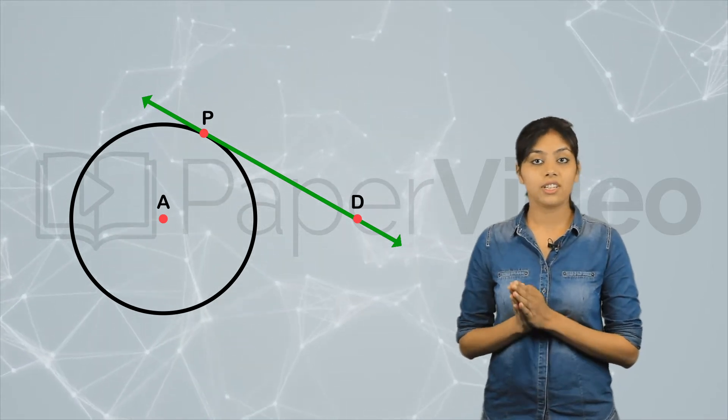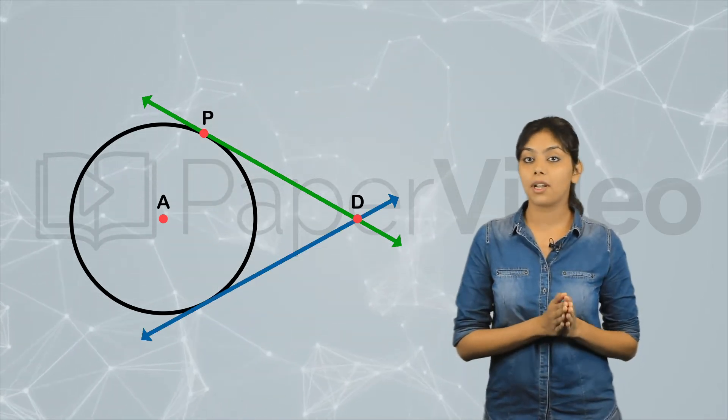Now, draw another tangent DQ from point D to point Q on the circle.